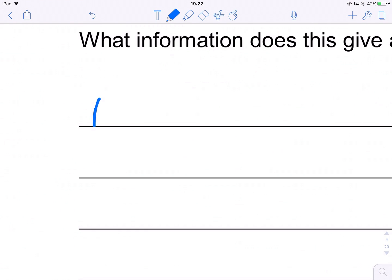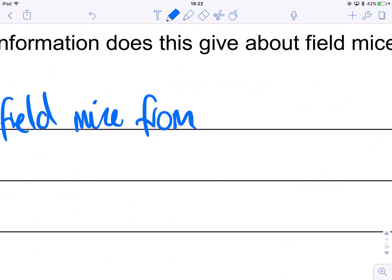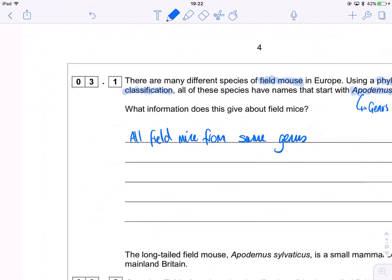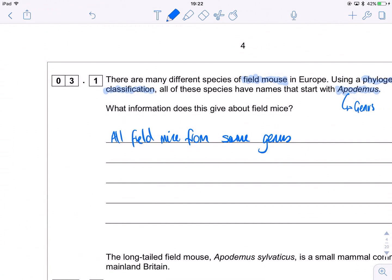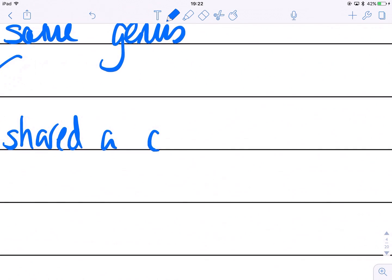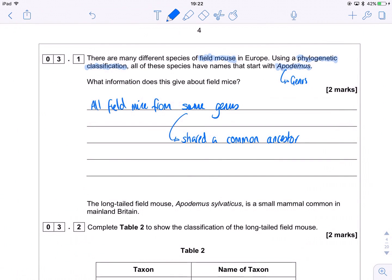All field mice from same genus. Now, what does this actually mean? Well, it means that many, many moons ago, back in ancient history, these guys shared a common ancestor. So they shared a common ancestor. And that is it for this question. Two marks, nice and easy. So they had a common ancestor. They both evolved from the same species, the same ancestral species. So that's two marks right there, which is nice and easy.